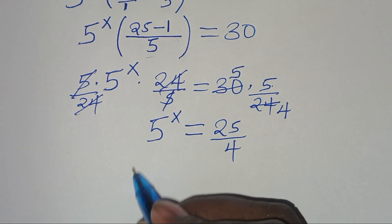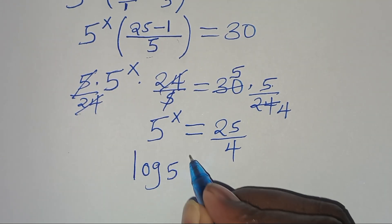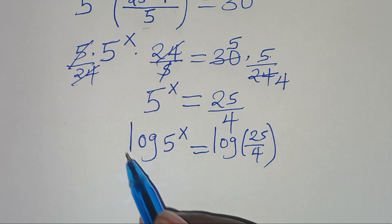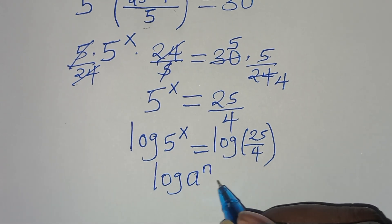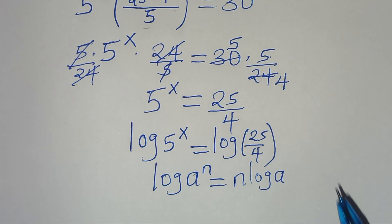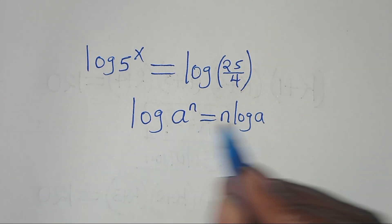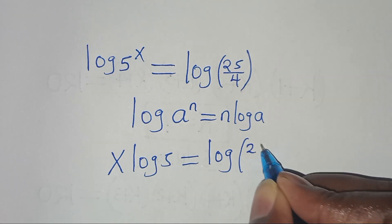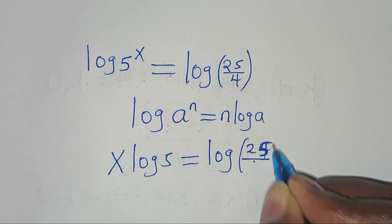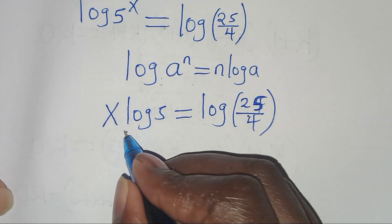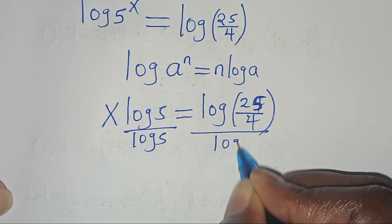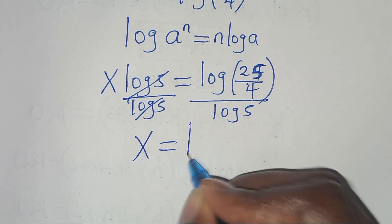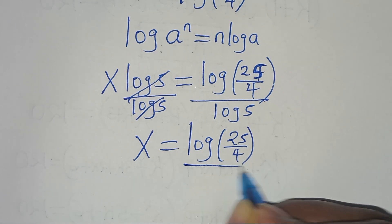Now, to solve for x here, we introduce logarithm on both sides. We have log 5 to the power of x, this is equal to log 25 over 4. Now log 5 to the power of x is in the form of log a to the power of n, which we can express as n log a. So applying this power property, log 5 to the power of x becomes x log 5. This is equal to log 25 over 4. So we can divide both sides by log 5, and log 5 simplifies. This implies we have x is equal to log 25 over 4, divided by log 5.